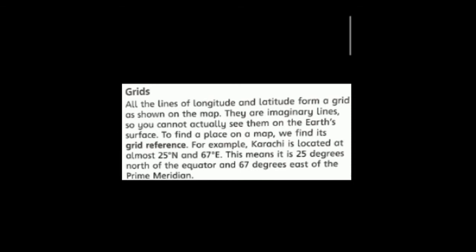For example, Pilgras is located at almost 25 degrees north and 67 degrees east. This means it is 25 degrees north of the equator and 67 degrees east of the prime meridian.